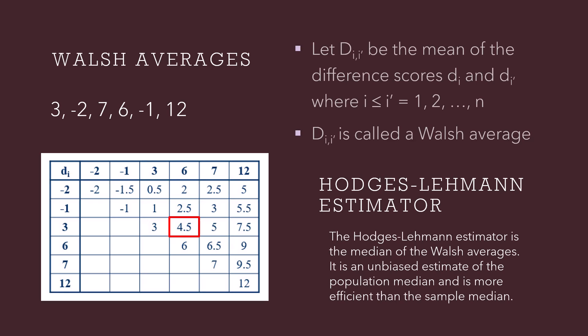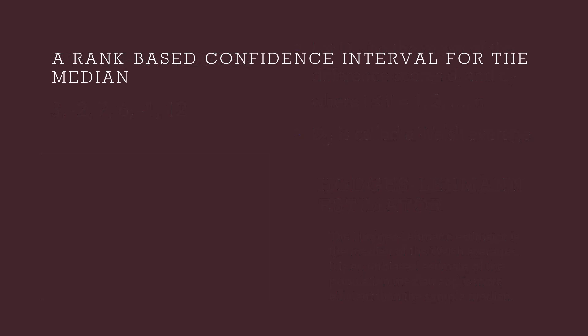What does it mean to be more efficient? It means that when we construct a confidence interval about the population median using n observations, this confidence interval will be narrower than if we used the sign test with the same number of observations. If the confidence interval is narrower, it is more informative, and when constructed using the same number of observations as a competing method, it is more efficient. Now that we have a better method to estimate the population median, let's turn to constructing a confidence interval about the population median.